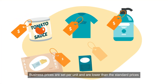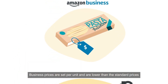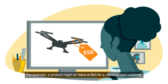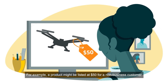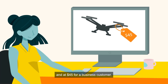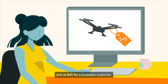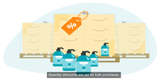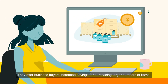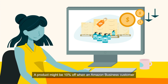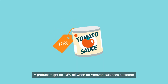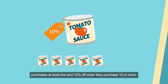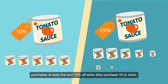Business prices are set per unit and are lower than the standard prices available to non-business customers. For example, a product might be listed at $50 for a non-business customer and at $45 for a business customer. Quantity discounts are set for bulk purchases and offer business buyers increased savings for purchasing larger numbers of items. A product might be 10% off when an Amazon business customer purchases at least 5, and 15% off when they purchase 10 or more.